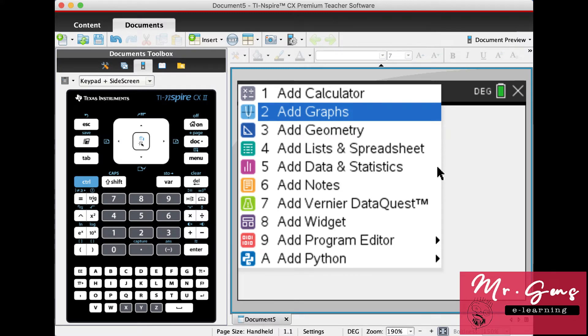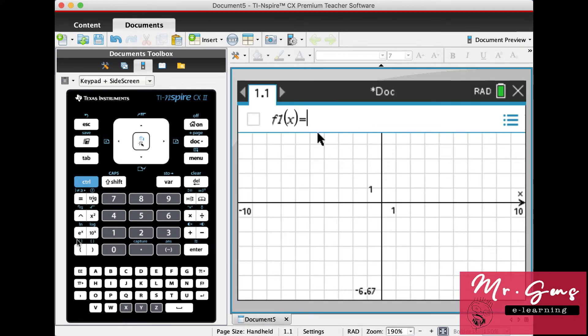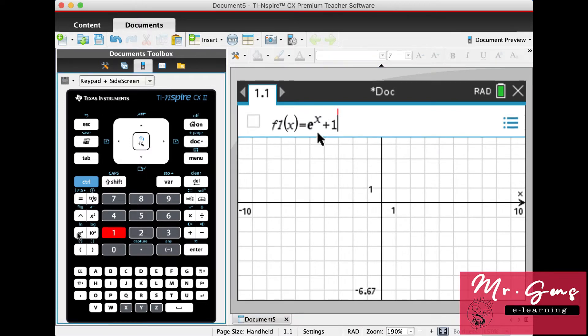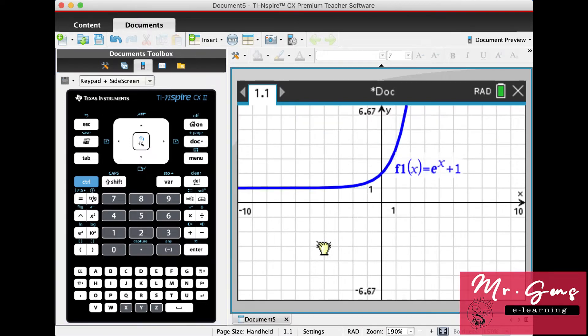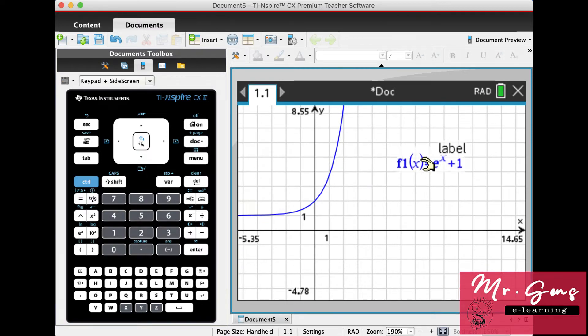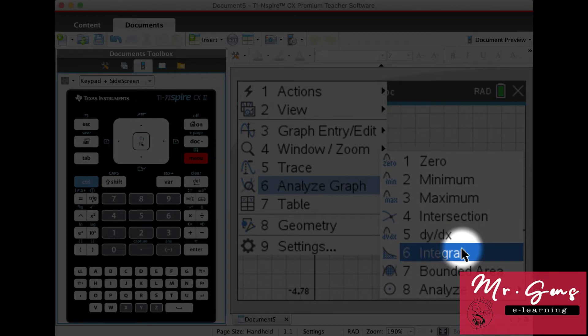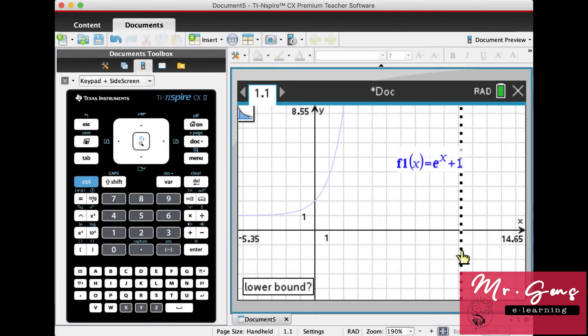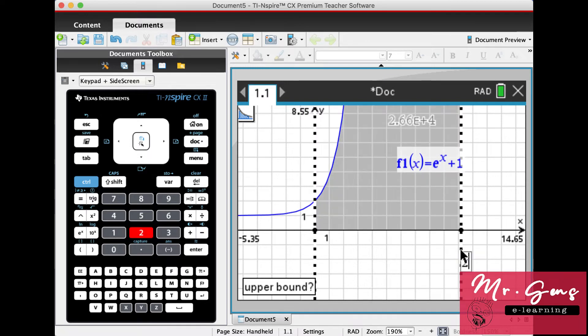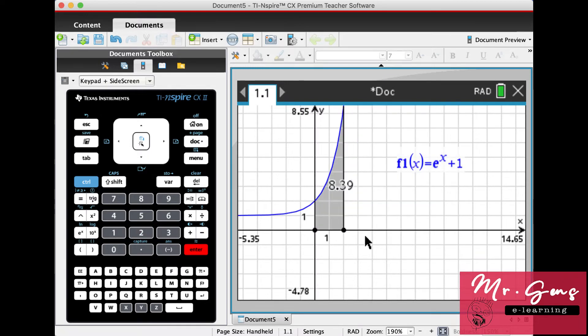Let's define the curve on the graph screen. If you press menu, analyze, then integral, you can define your lower bound and upper bound. Upper bound is 2, and our area is 8.39.